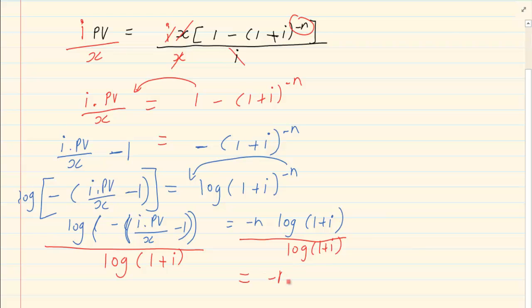Then since we have minus n, we are going to take the entire answer and change the sign. So my final answer would be positive n equals negative log [minus i times PV over x minus 1] all over log (1 plus i).